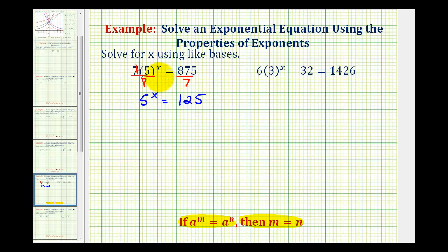Now that we've isolated the exponential part, we want to write 125 with a base of five. Since 125 = 5 × 25, and 25 = 5 × 5, 125 equals three factors of five, which we can write as 5^3. So we have 5^x = 5^3.